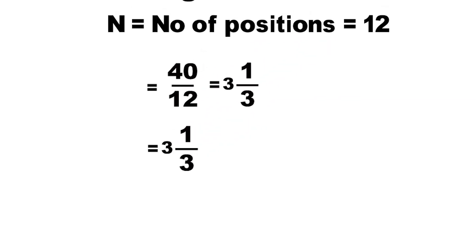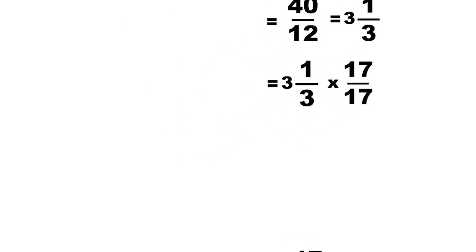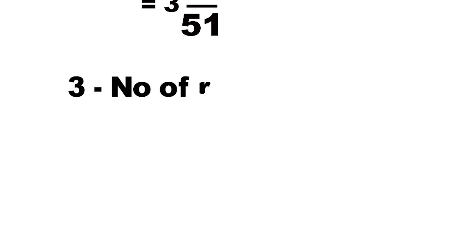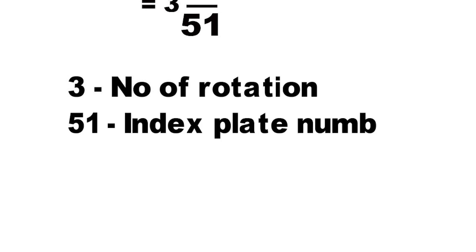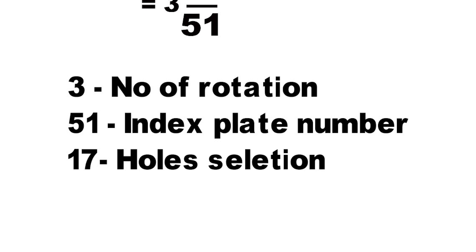In our calculation, if we multiply 17 on both numerator and denominator, we will get the value 3 and 17/51. 3 denotes the number of rotations, 51 denotes the indexing plate number, and 17 denotes the hole selection.